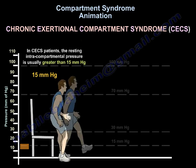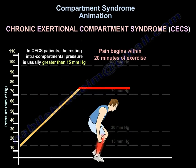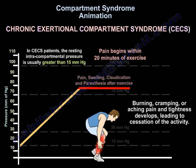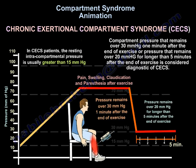The compartment pressure rises sharply after the initiation of exercise, usually causing the patient pain within 20 minutes. Burning, cramping, or aching pain and tightness develops, leading to cessation of activity. Compartment pressure that remains over 30 mmHg one minute after exercise, or over 20 mmHg for longer than 5 minutes after exercise, is considered diagnostic of chronic exertional compartment syndrome.